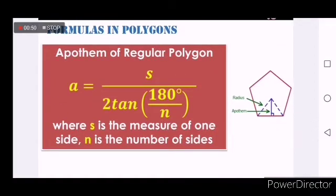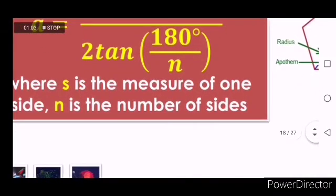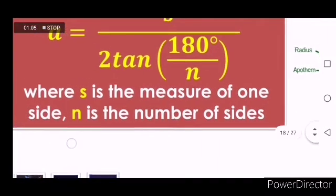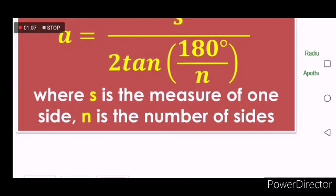If the missing length is the apothem, the formula is s over 2 tangent 180 degrees over n, where s always represents the measure of one side and n is the number of sides.